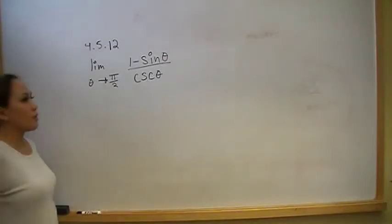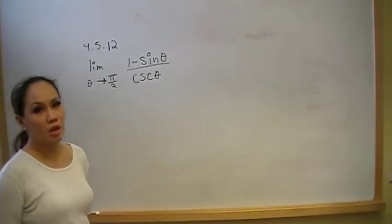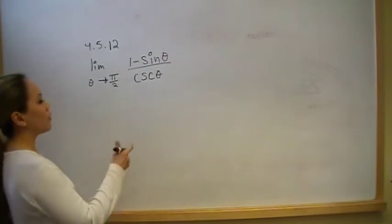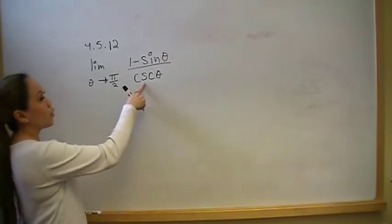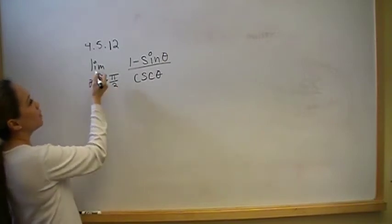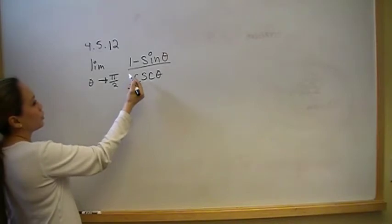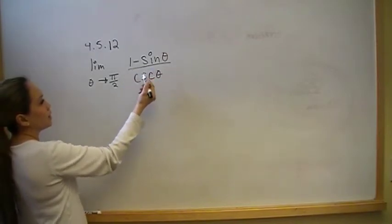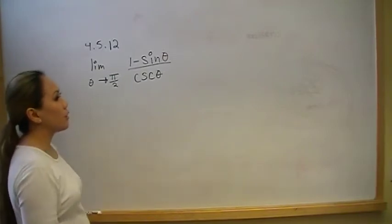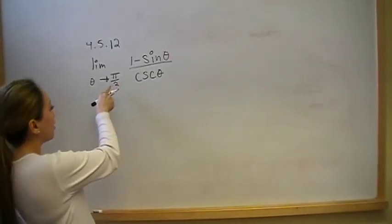This is problem number 12 from section 4.5 covering L'Hôpital's rule. This one is really easy. They're asking us to find the limit as theta goes to pi over 2 of 1 minus sine theta over cosecant theta. If you get this on the test and you don't know the value of cosecant theta at pi over 2,